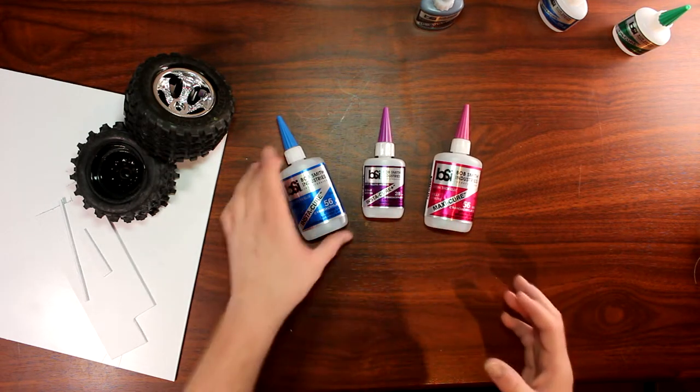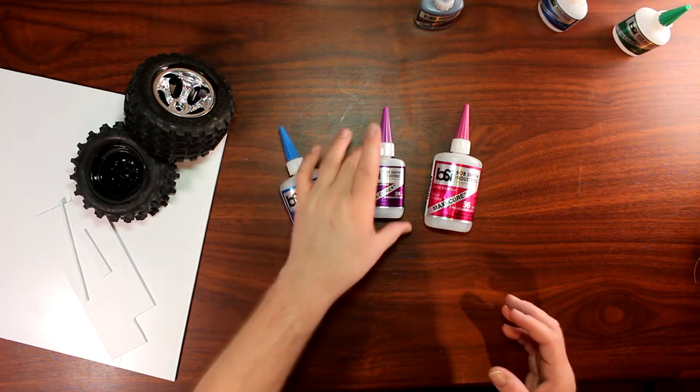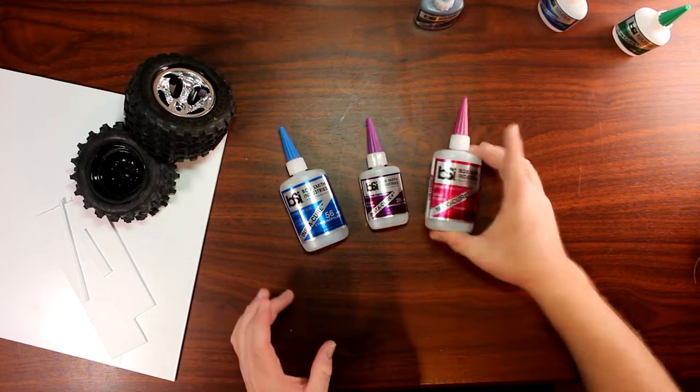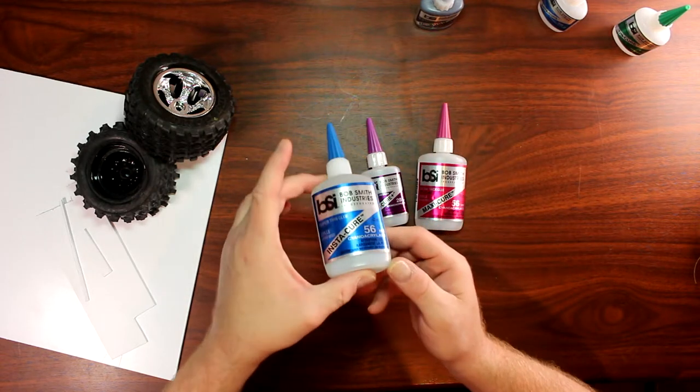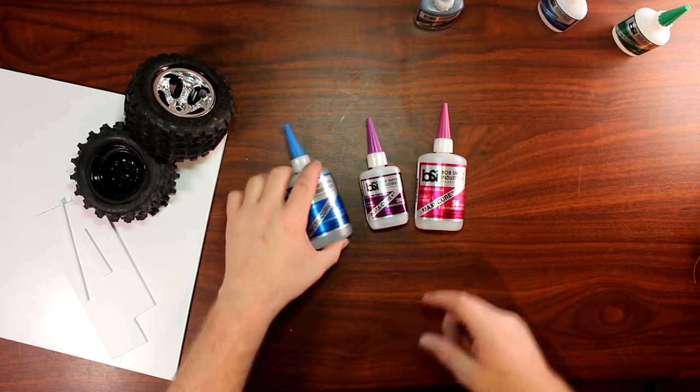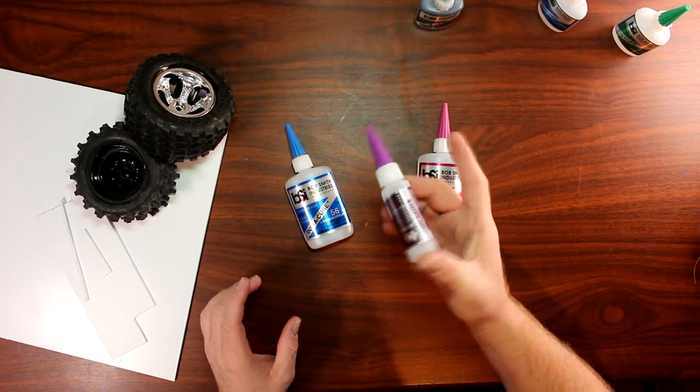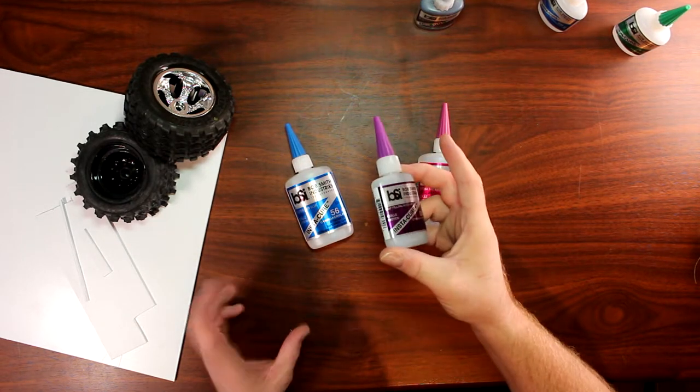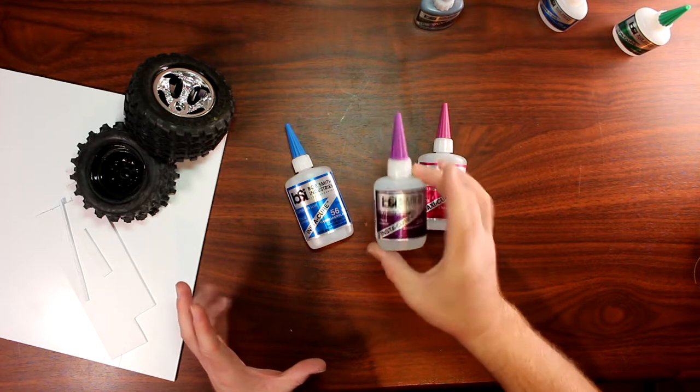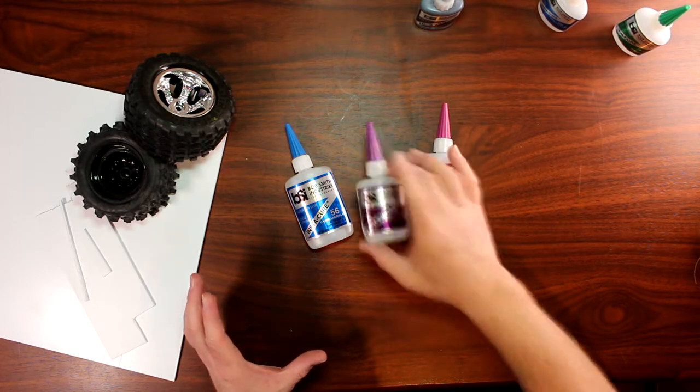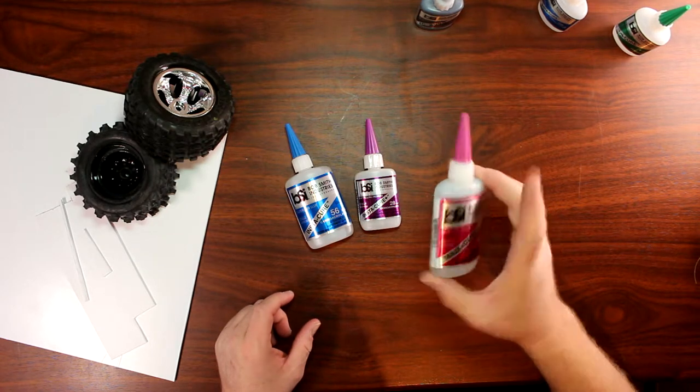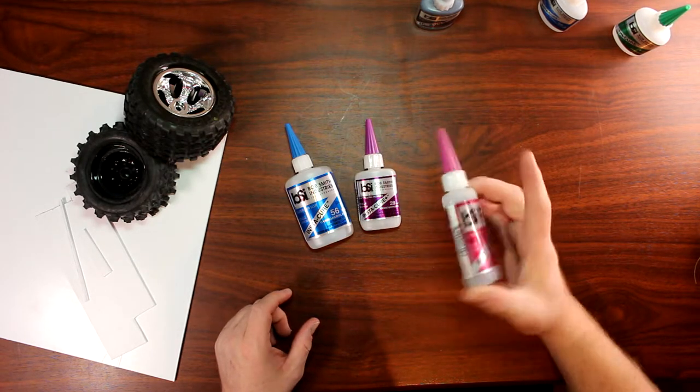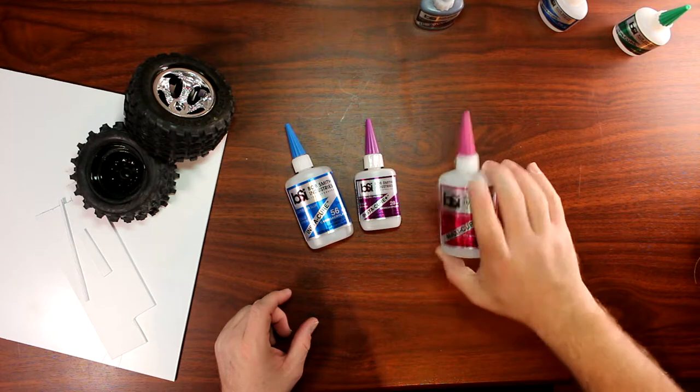Now the difference is the viscosity of the physical liquid. I'm not sure if you guys can see this on the camera. This is basically like water. The medium is a little bit like maybe 3% milk, maybe a little bit thicker. The extra thick is a little bit like extra thick gravy. The way it moves, it's a little bit sluggish.